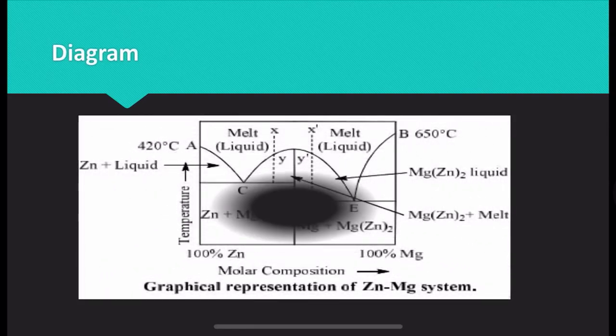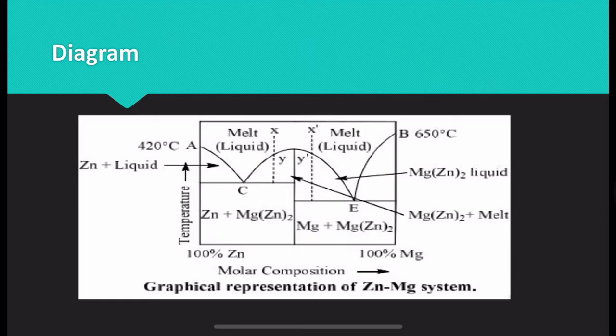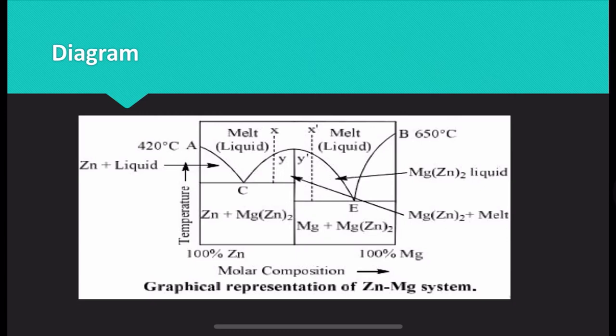Let's look at the phase diagram of Zn and Mg. On the x-axis we plot molar composition, and on the y-axis we plot temperature. On the left side we take 100% Zn, and on the right side 100% Mg. Point A is the melting point of Zn at 420°C. On the right side at point B is the melting point of Mg at 650°C. So there are four phases: Zn, Mg, intermediate MgZn₂, and the melt.